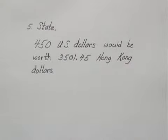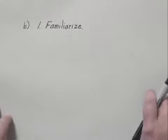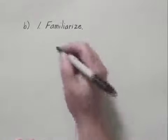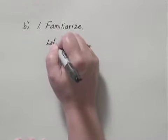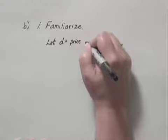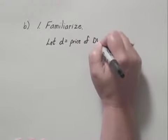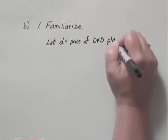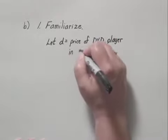Now we move to part B, which was the question about the DVD player. We'll start the five-step problem-solving process again. Here, we'll let D equal the price of the DVD player. And this time, we're looking for it in U.S. dollars.